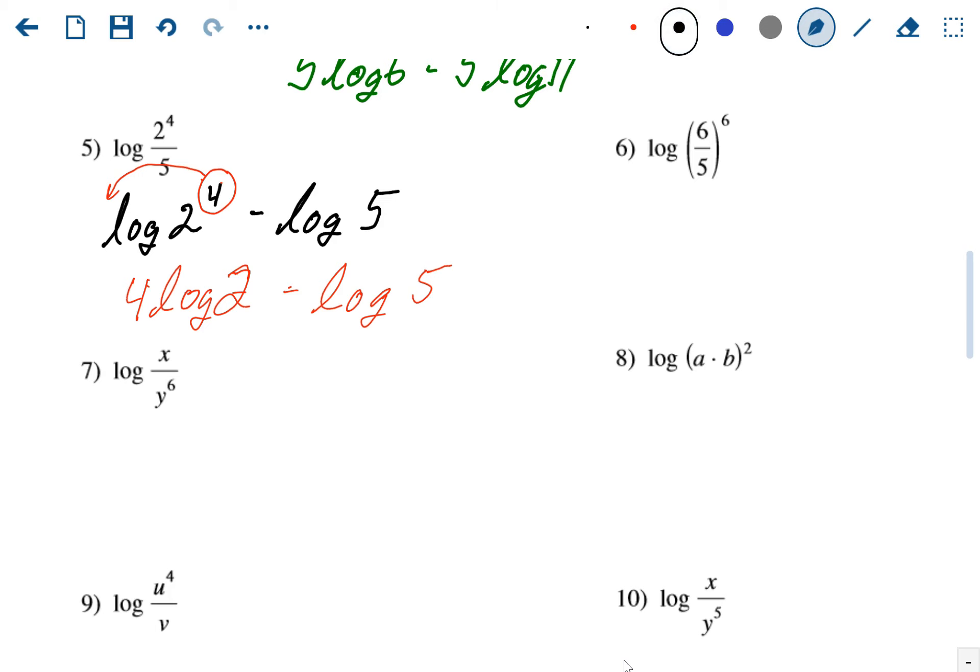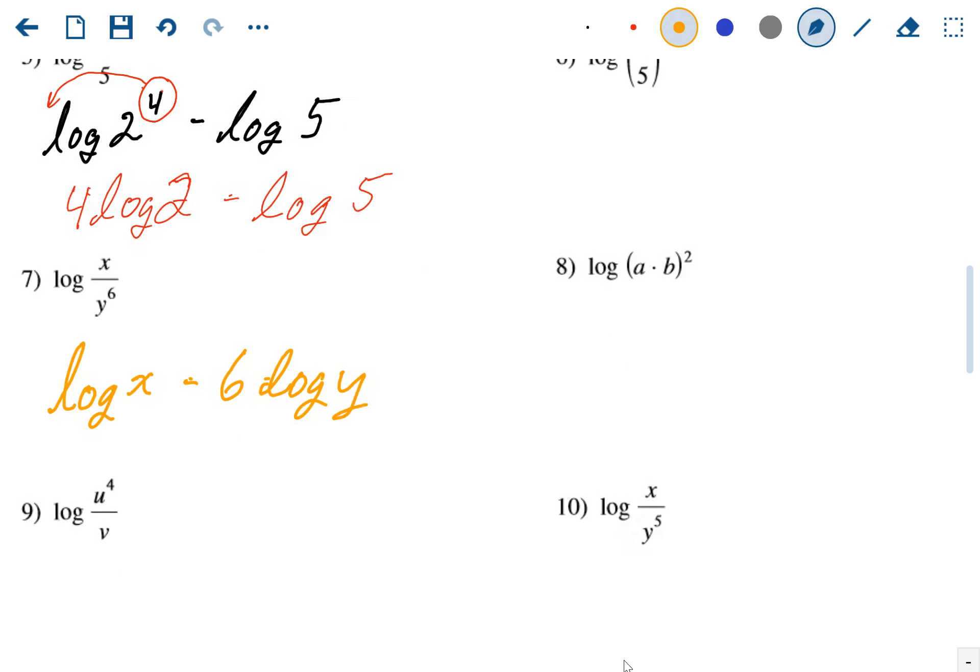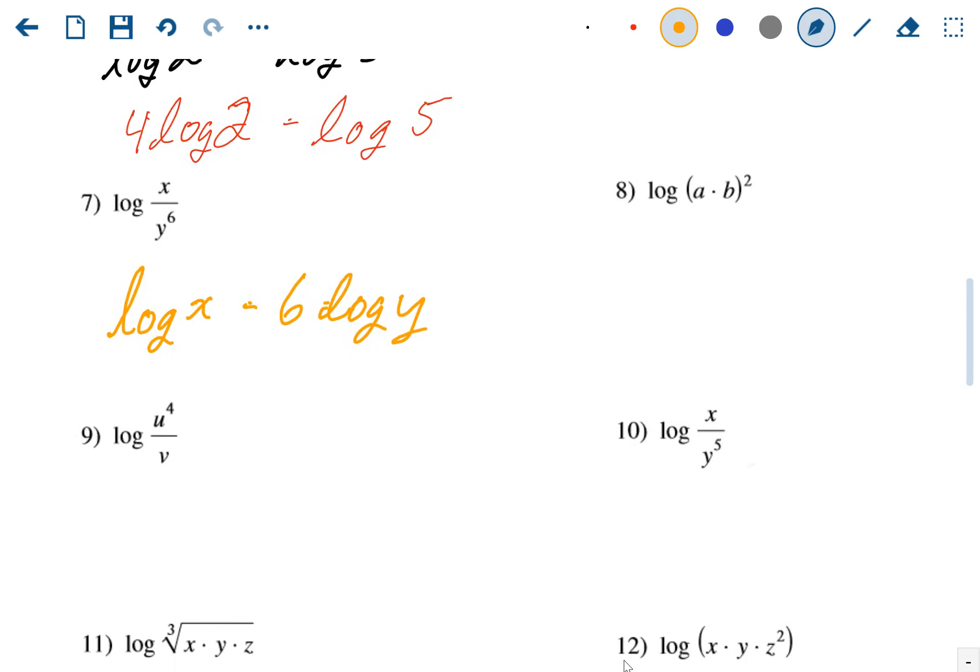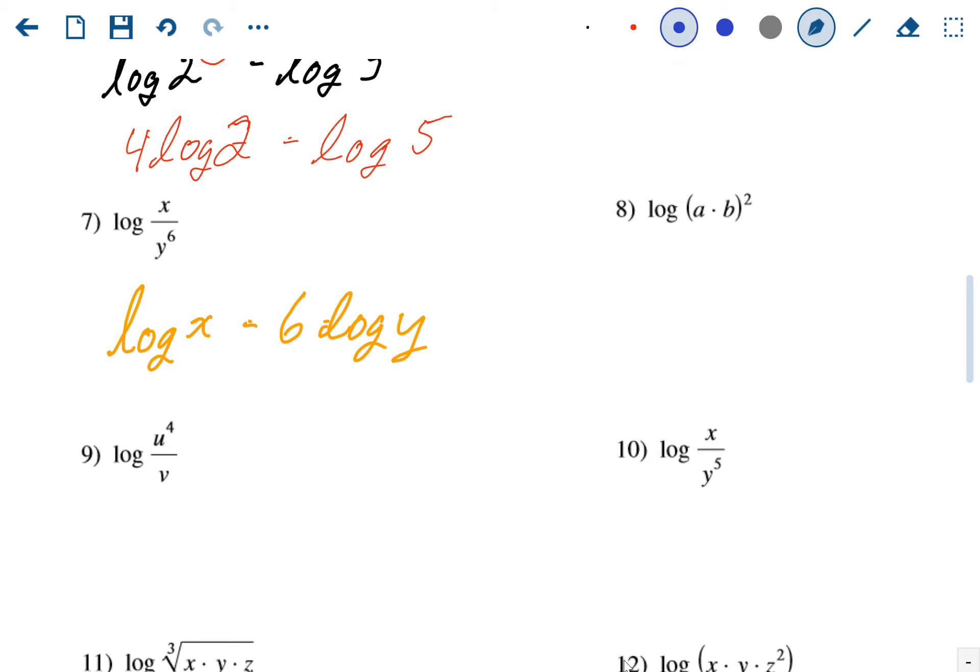Number 7 is pretty similar to that previous one, except now this exponent is only on the y. This one would be log x minus 6 log y. And again, 9 is very similar to those as well. It's gonna be 4 log u, exponents always go out front, and then minus because it's a division, log v.